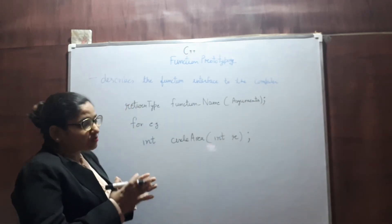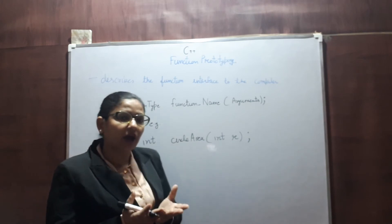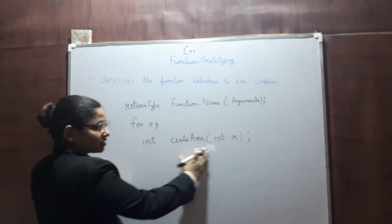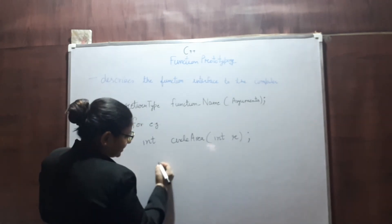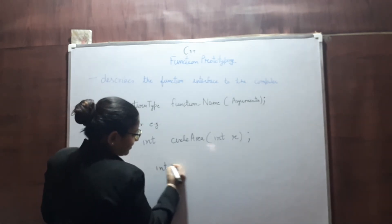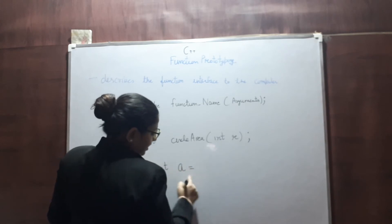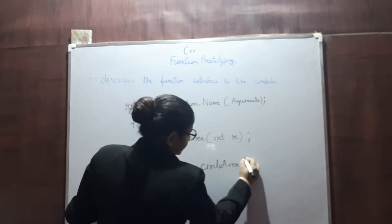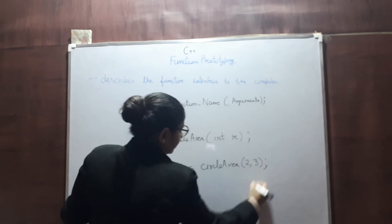But next question is, how your compiler uses this information? Suppose this is my function prototype, and somewhere in my program I am having this statement: int a = circle_area(2, 3);